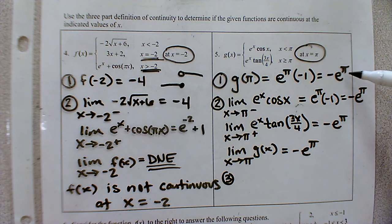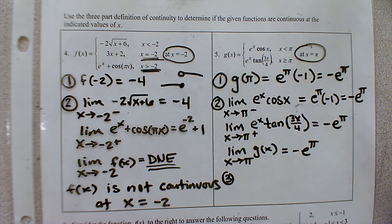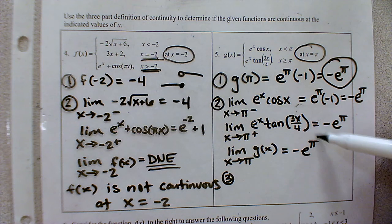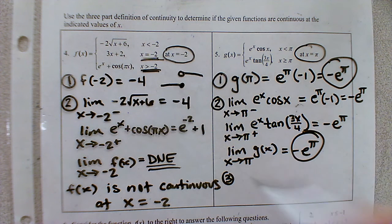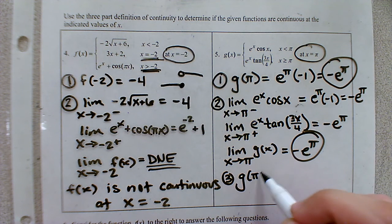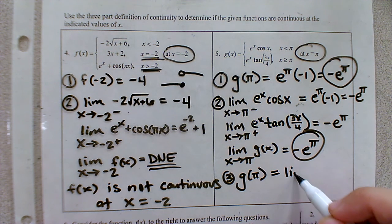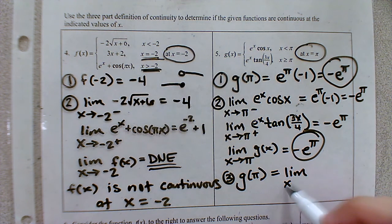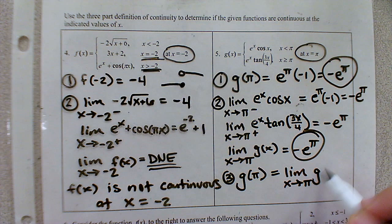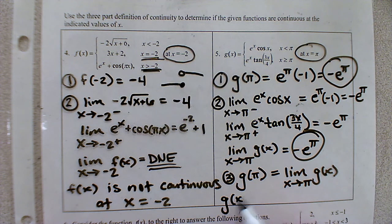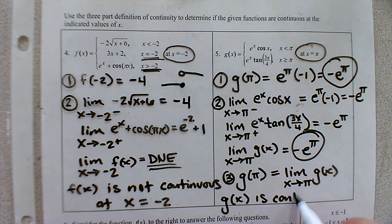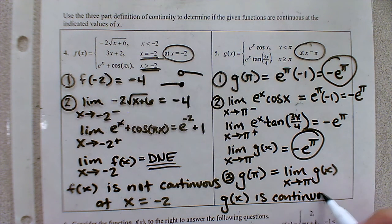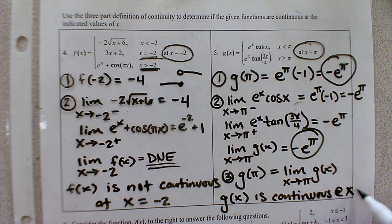We have a point, we have a limit, and the third piece is that they must match. Clearly the point value equals the limit value: g of pi equals the limit as we approach pi. Therefore, g of x is continuous at x equals pi.